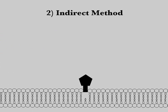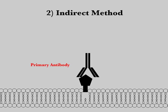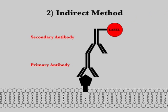In indirect immunohistochemistry, a primary antibody must selectively bind to the target antigen and successive antibodies must bind selectively to the antibodies that come before them. The labeling agent, a fluorophore or chromophore, is conjugated to a secondary or even tertiary antibody.